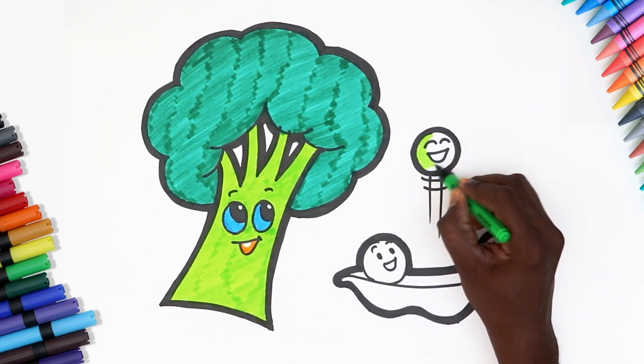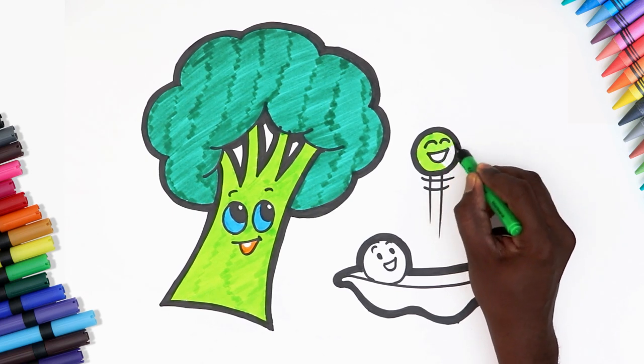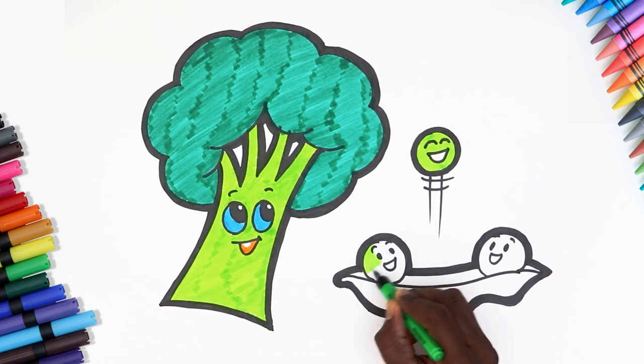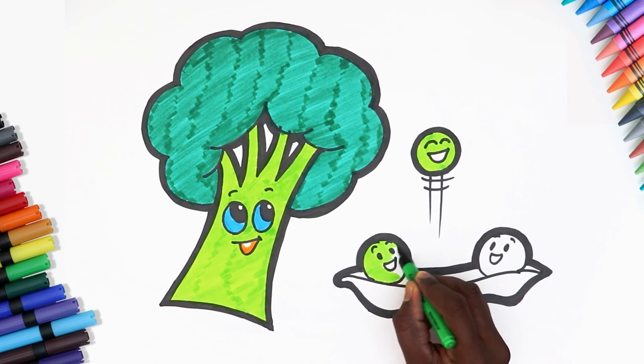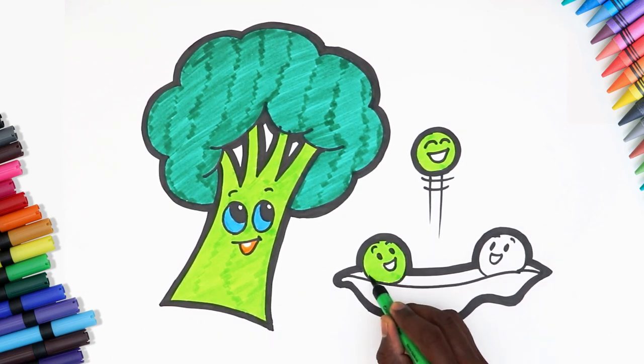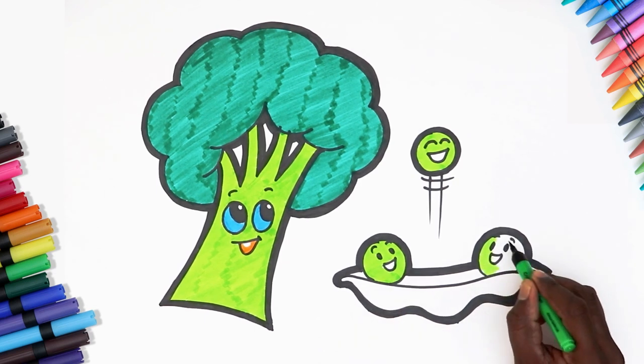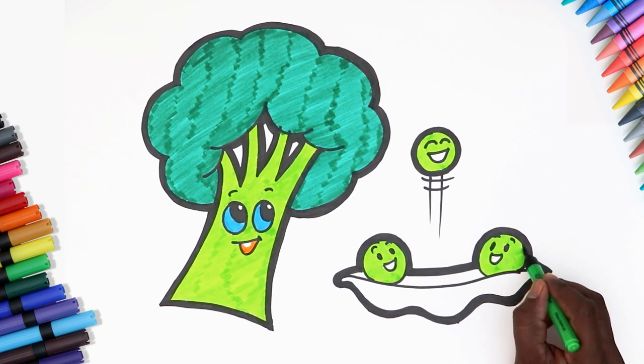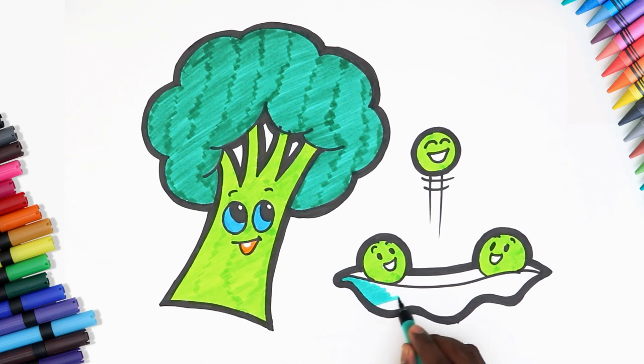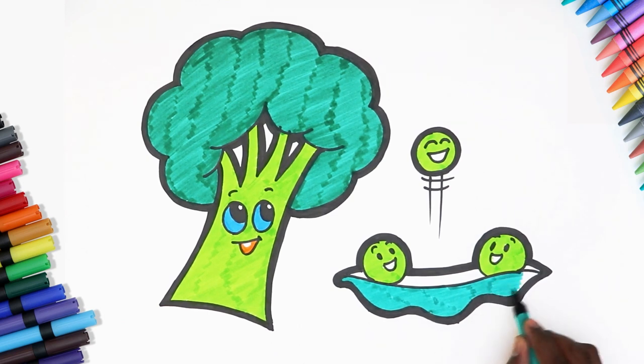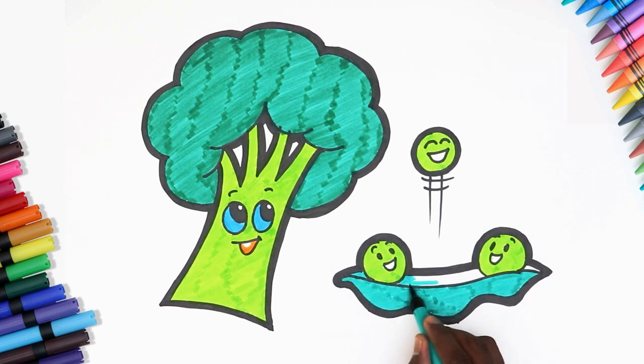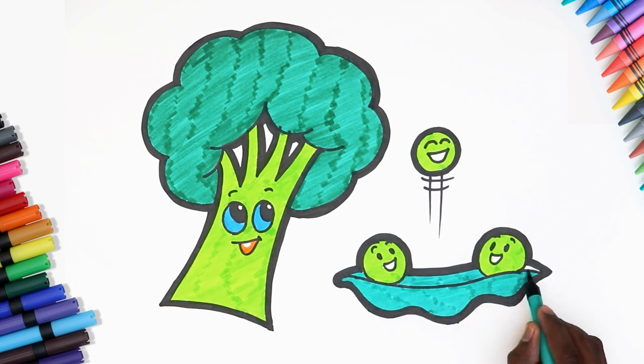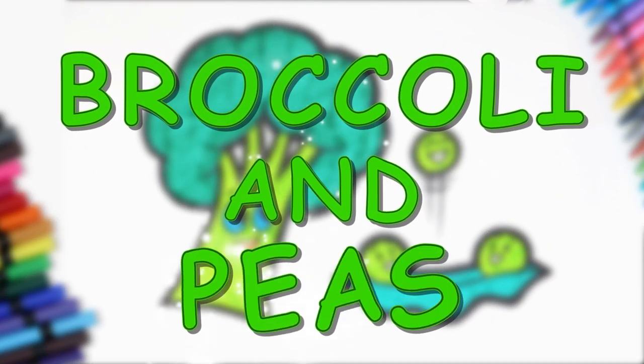For the peas, use a light green color and begin coloring. Aren't they the cutest little peas? And lastly, let's color the pod with a dark green color. Woohoo! We're done! And here they are kids. The yummiest broccoli and the happiest peas.